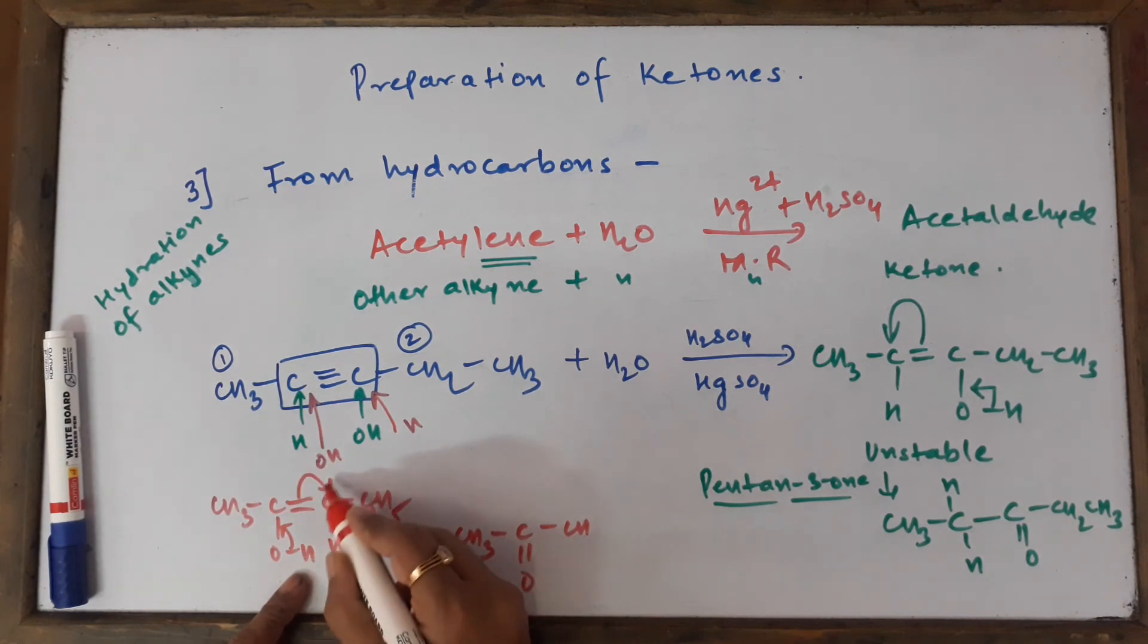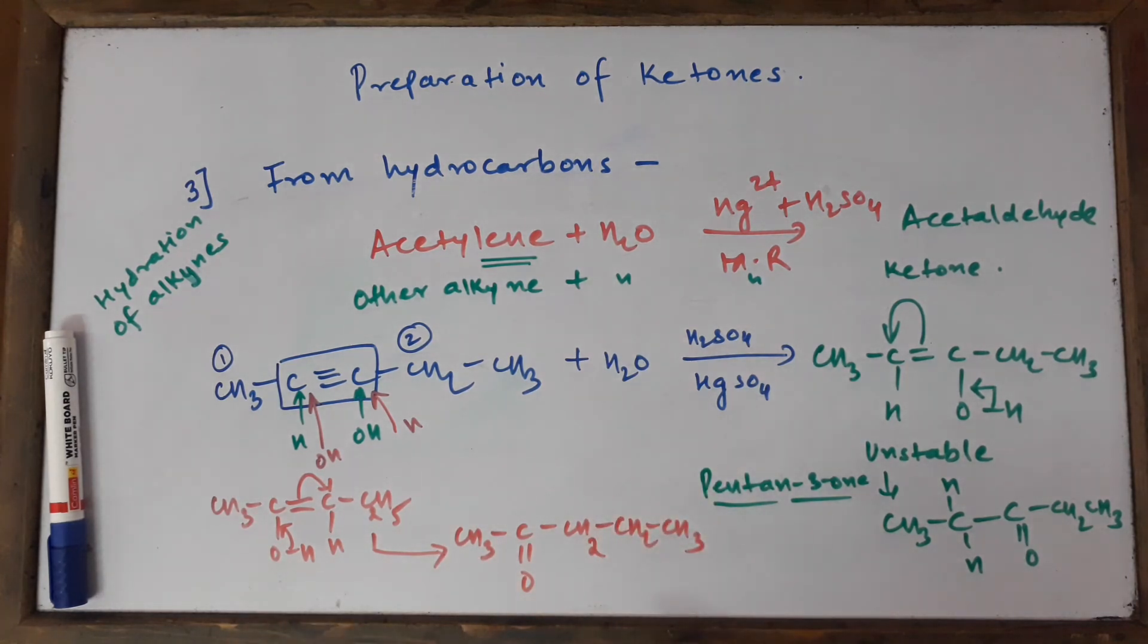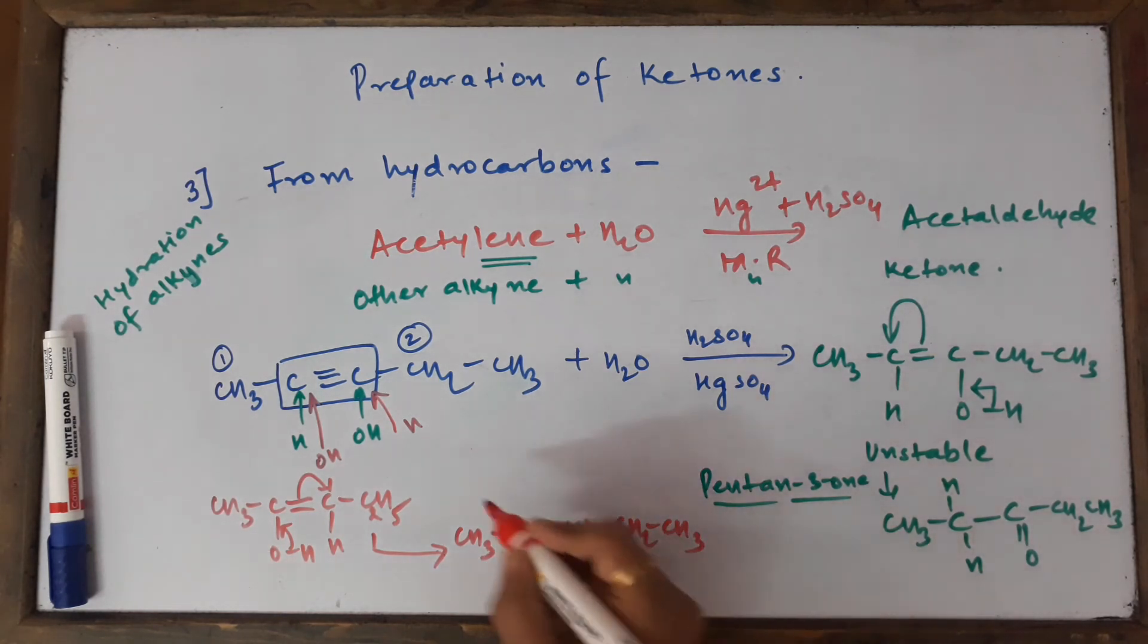This H comes over there, so let's write CH2-CH2-CH3. Look at this - 1, 2, 3, 4, 5 - so we get pentane-2-one.